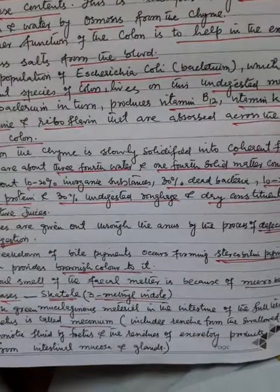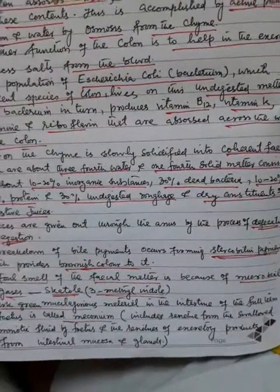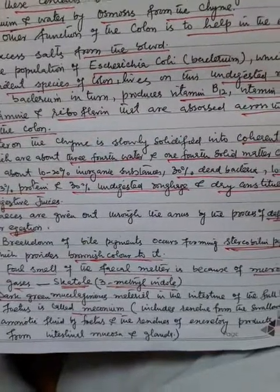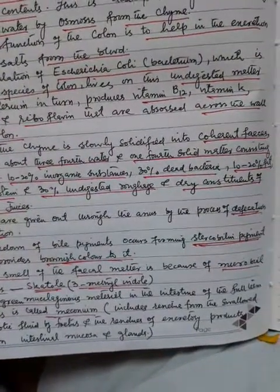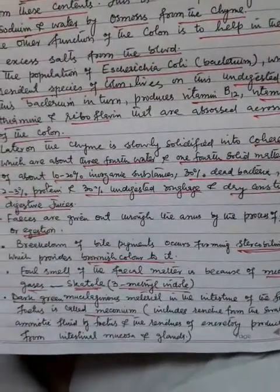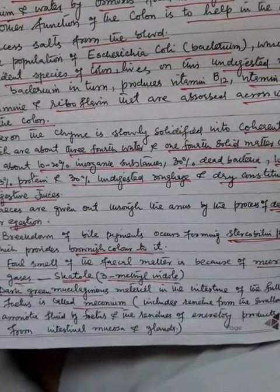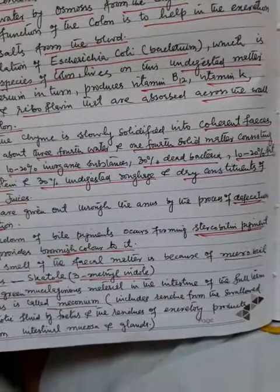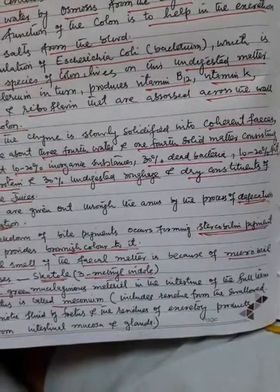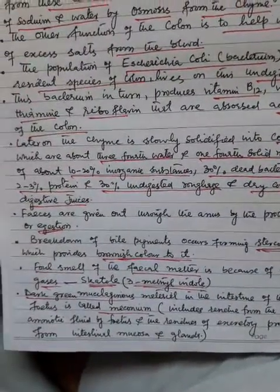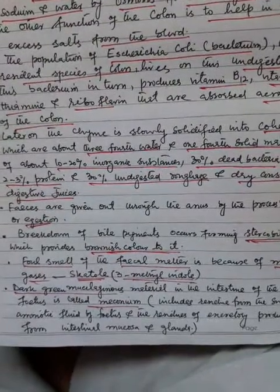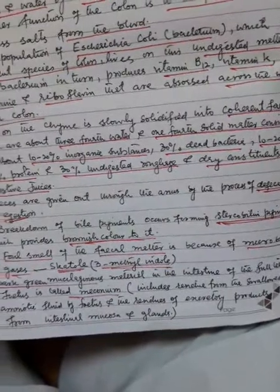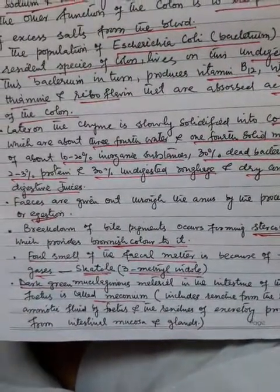The chyme is slowly solidified into coherent feces, which are about three-fourths water and one-fourth solid matter, consisting of about 10–20% inorganic substances, 30% dead bacteria, 10–20% fat, 2–3% protein, and 30% undigested roughage and dry constituents of digestive juices.